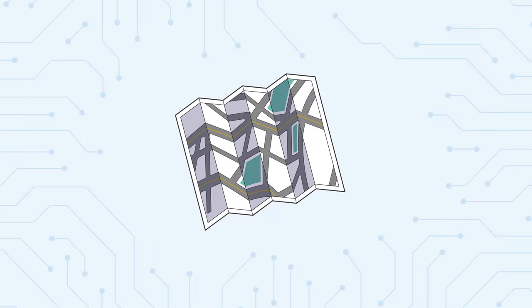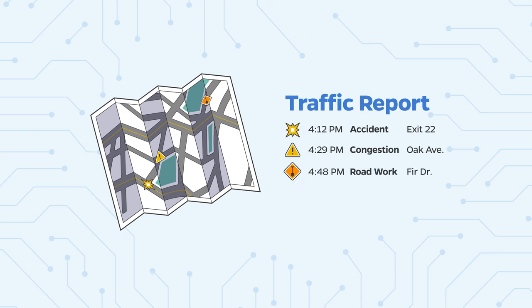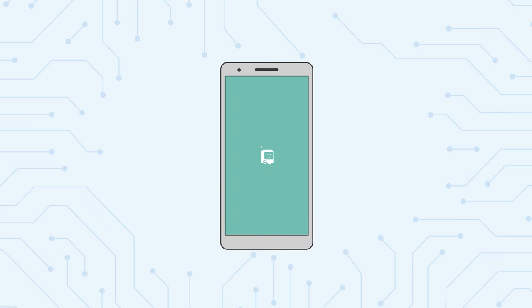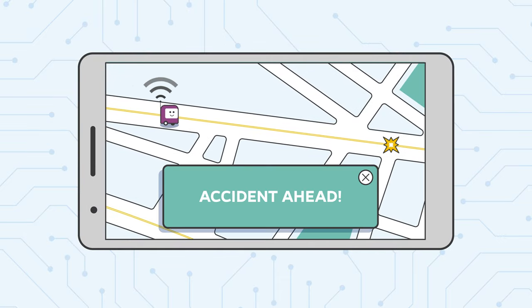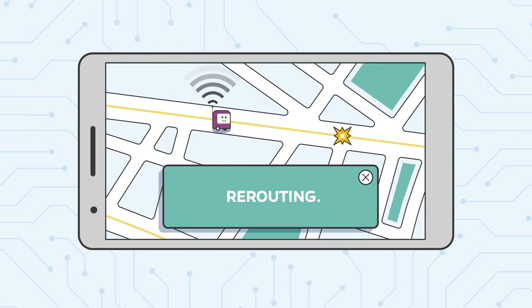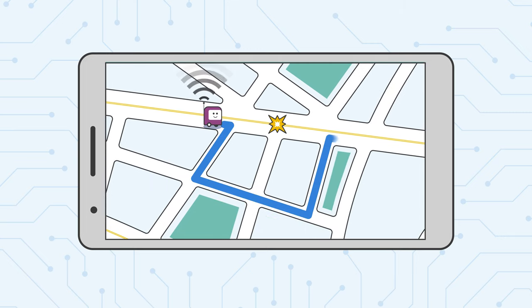Now let's look at what happens when the focus shifts to improving the commute and driving experience instead of providing accurate traffic updates. With real-time mobile applications for traffic and navigation, only relevant traffic and other road information specific to each driver's route is shared with the driver, and that information is shared in real-time when the driver needs it to affect his or her decision making.